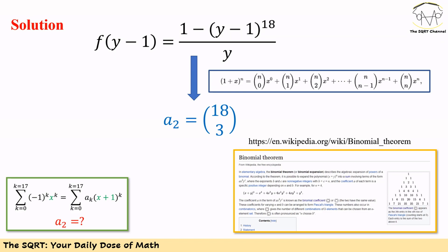If we want to expand 1 plus x to the power of n, then we are going to have x^0, x^1, x^2, up to x to the power of n. And then we will have n choose 0 for the first term, n choose 1 for the second term, n choose 2 for the third term, and so on. These are the coefficients of each term that we have here.